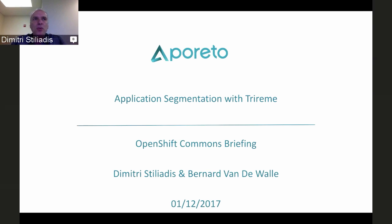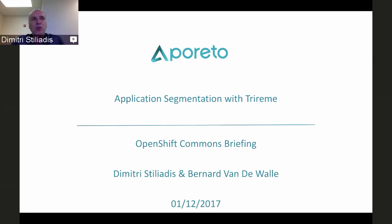What we're going to talk about today is TriRim. TriRim is an open source project — essentially a library that allows you to implement security functions. It provides a Kubernetes integration and because it's transparently installed in Kubernetes, it's also very useful to the OpenShift community. One of the key value propositions of TriRim is that one can achieve actual security on an OpenShift deployment with very little operational complexity, simplifying the operational deployment of large OpenShift clusters while providing security.